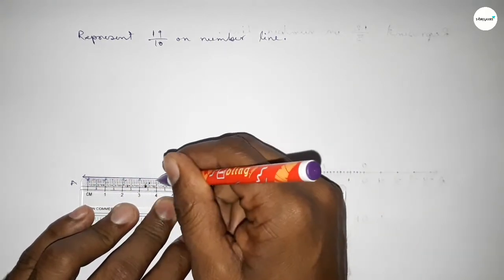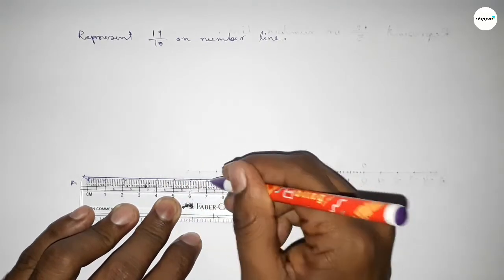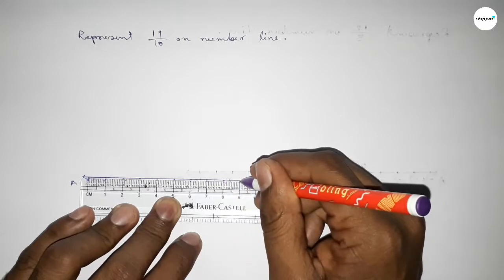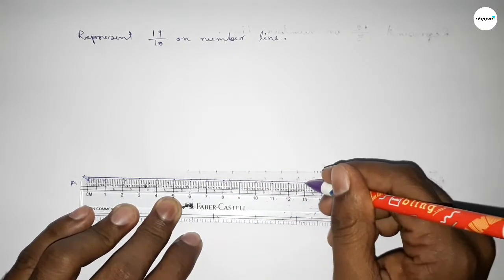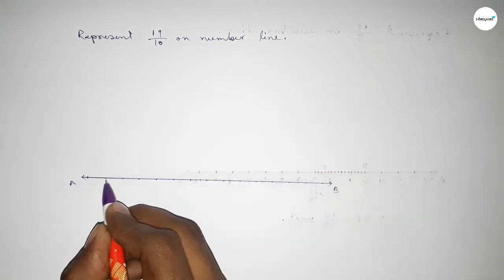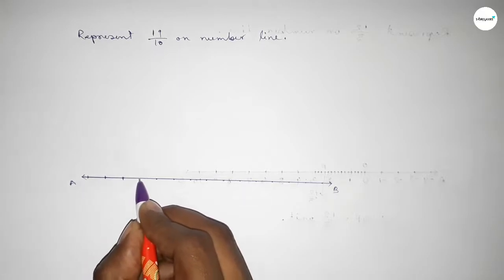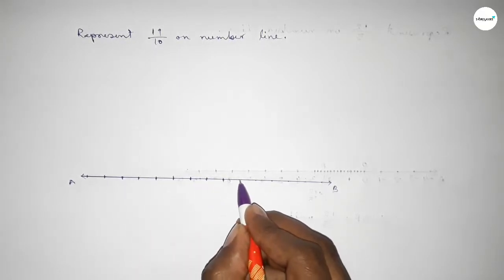Next we have to mark the numbers on the line by using a scale. First marking the numbers on the line, then again marking the numbers with deep color to understand perfectly.